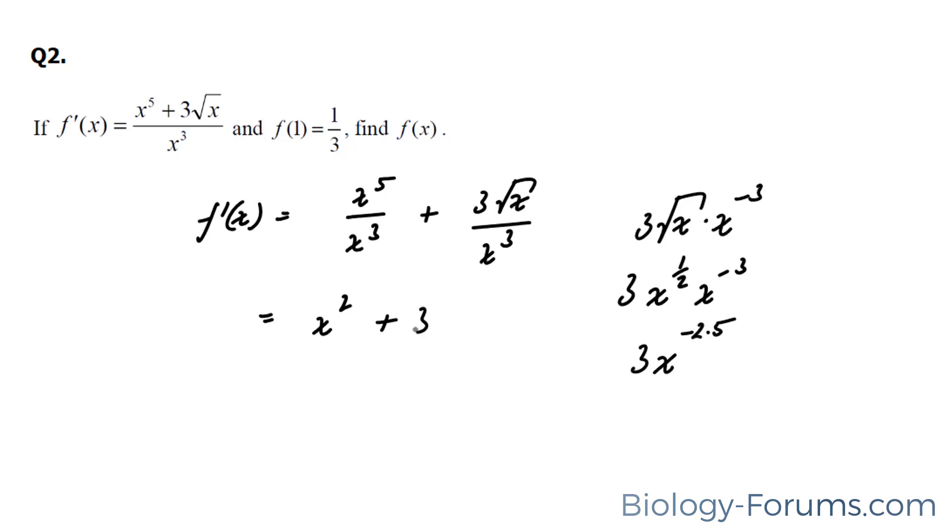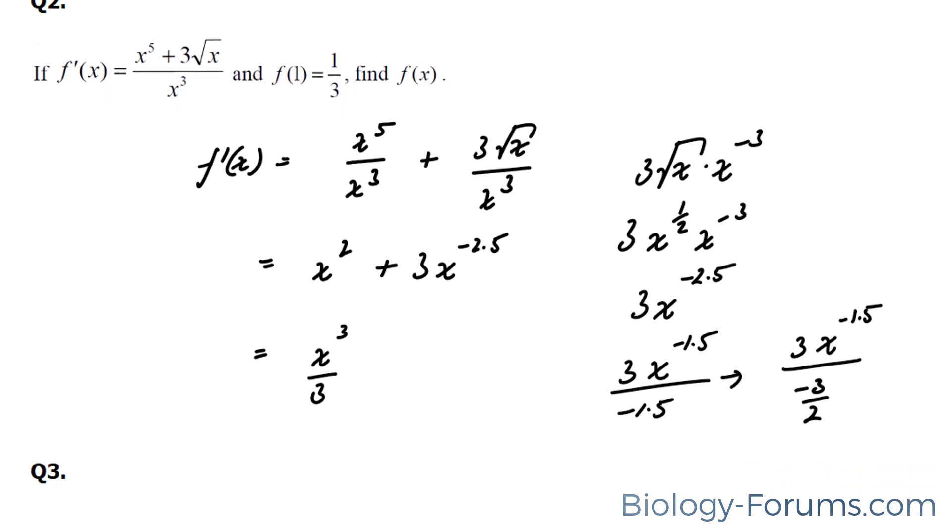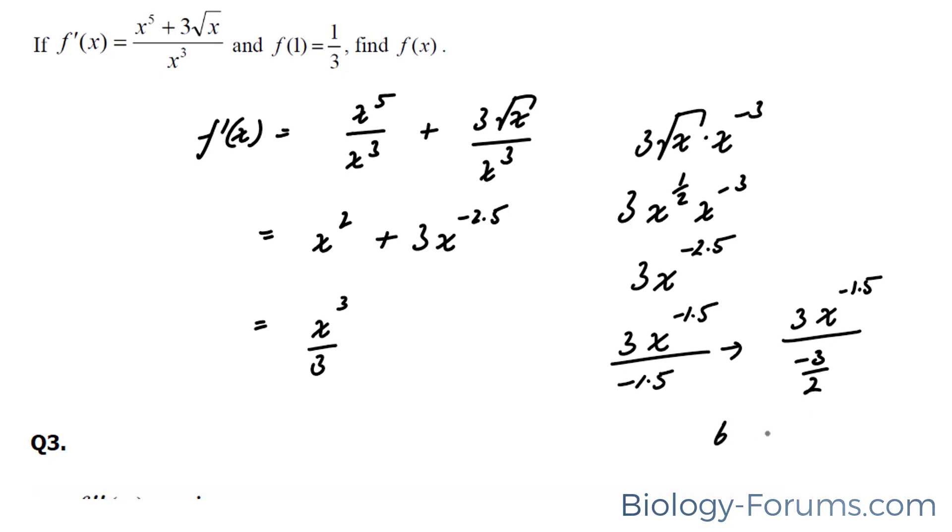So I'm going to place that right here, and next I'll find the antiderivative. The antiderivative for this is equal to x to the power of 3 over 3. The antiderivative to this will equal 3x negative 1.5 over negative 1.5, which gives us 3x negative 1.5 over negative 3 over 2, and this becomes 6x to the power of negative 1.5 over 3. And don't forget the negative.